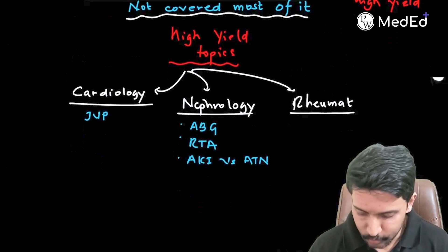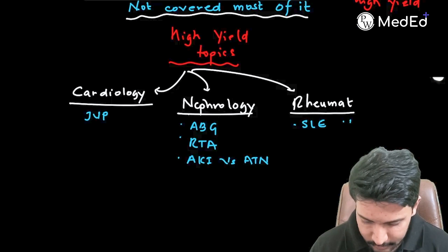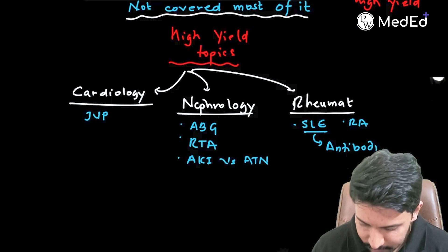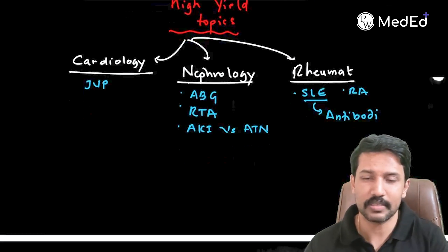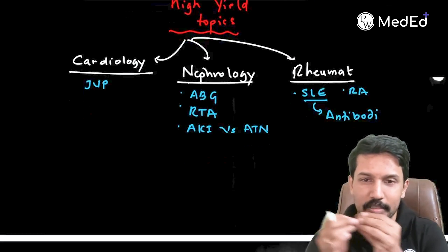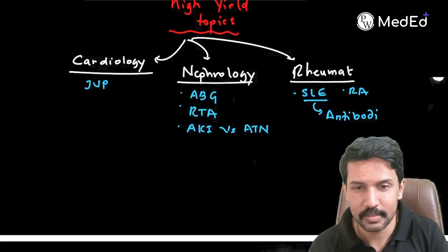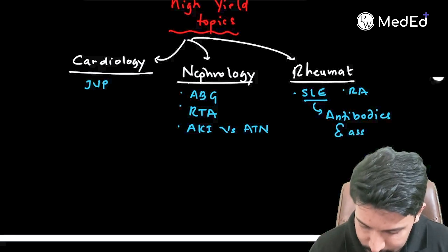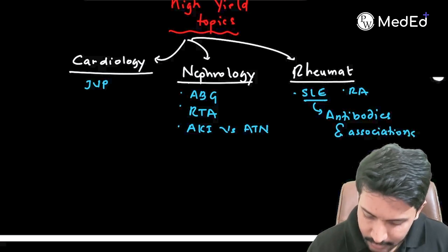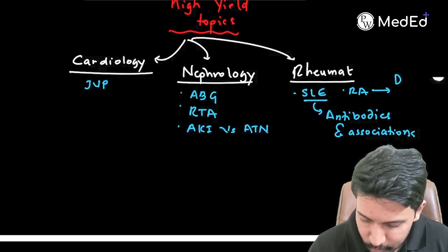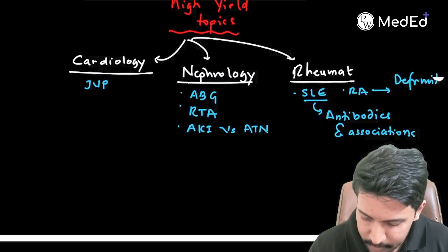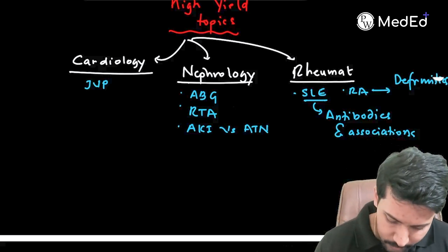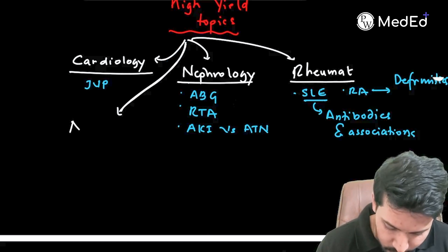From Rheumatology, focus on SLE and Rheumatoid Arthritis. For SLE, particularly concentrate on antibody correlations — which antibody is more sensitive, which is more specific, which is associated with drug-induced lupus, which is associated with neuro-lupus, and so on. For Rheumatoid Arthritis, primarily focus on deformities, as there can be potential image-based questions — these are also covered in Orthopaedics.